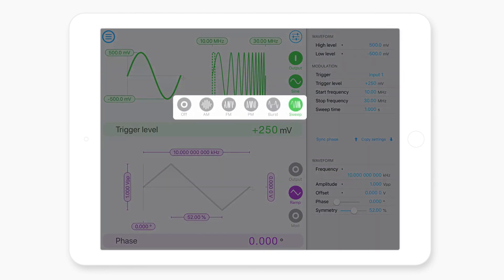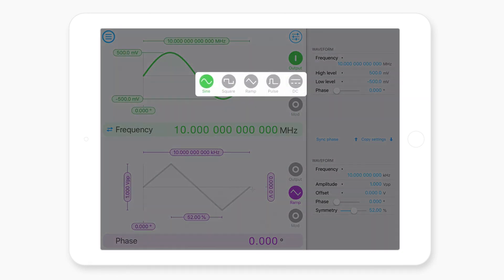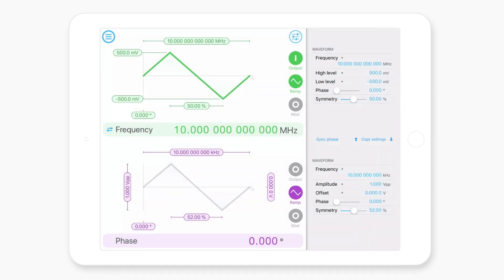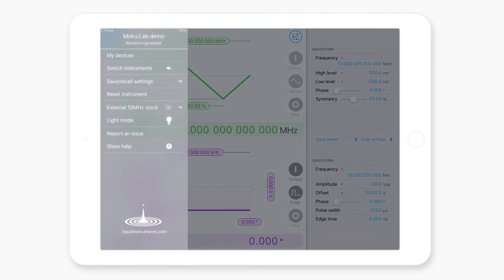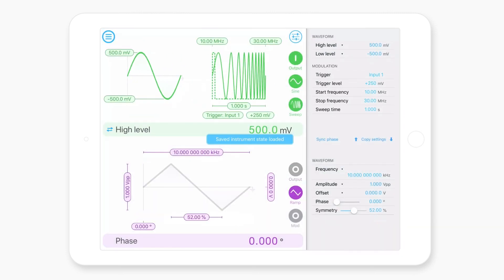Now, if we were to turn modulation off, change our waveform, configure the instrument in a very different way, then if we wanted to quickly return to our saved state, we simply access the main menu again, select save recall settings, and then load saved state.